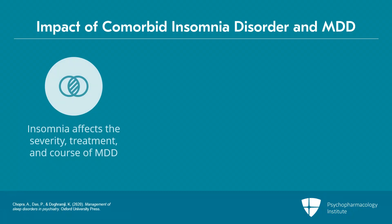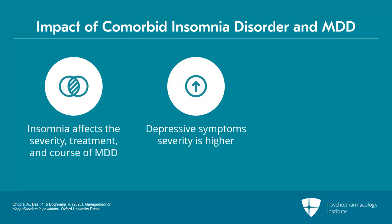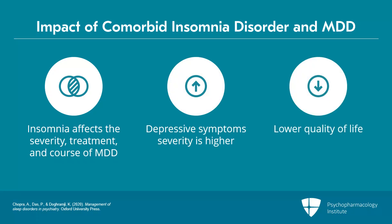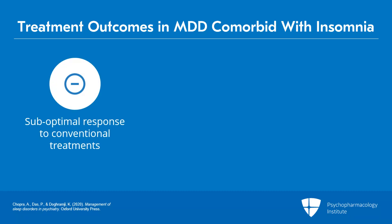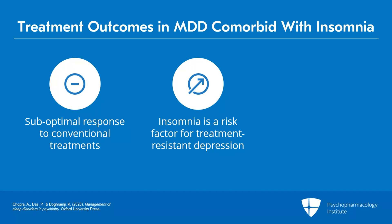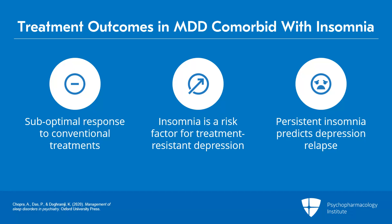What impact can insomnia have on the severity, treatment, and course of major depressive disorder? When insomnia disorder and major depressive disorder are comorbid, depressive symptom severity is understandably higher, and the quality of life has been shown to be lower compared to those with either disorder alone. Patients with comorbid insomnia and major depressive disorder usually don't respond to conventional treatments as well. It has been proven by multiple lines of evidence that insomnia is a risk factor for treatment resistance in depression. In fact, persistent insomnia is the most common residual symptom in patients with major depressive disorder and is considered an important predictor of depression relapse.